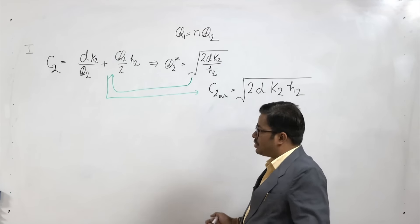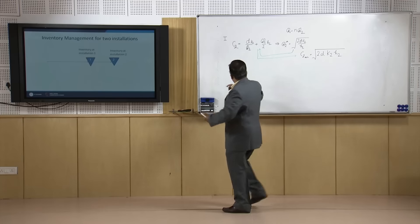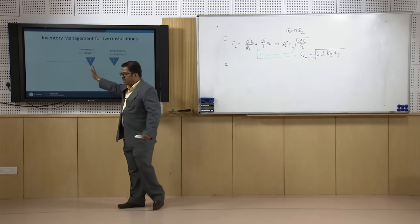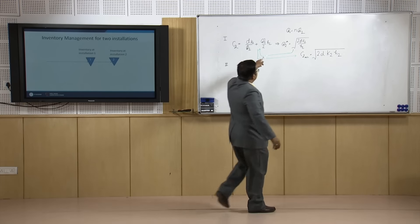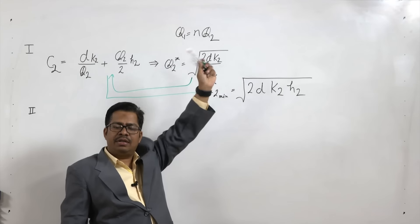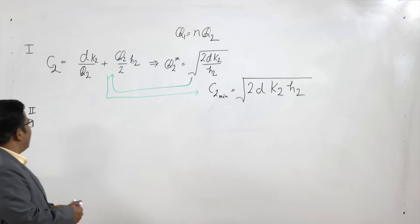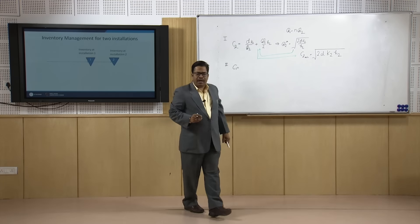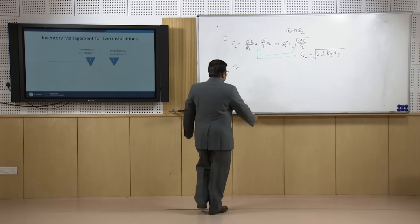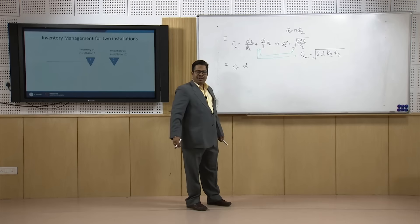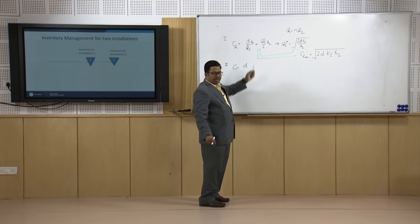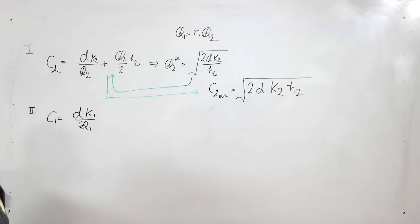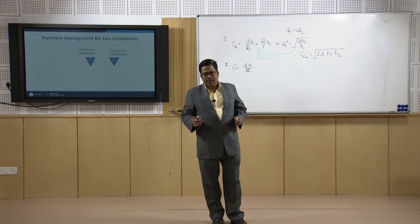This is the cost at stage 2. Now, coming to the second level, we want to determine the value of Q1 also. Q1 equals N times Q2. For that purpose, we write the expression for C1, the total variable cost at installation 1. D is the rate of consumption of the supply chain, so D remains as is. K2 is replaced by K1, and Q2 is replaced by Q1. This gives the ordering or setup cost at installation 1.